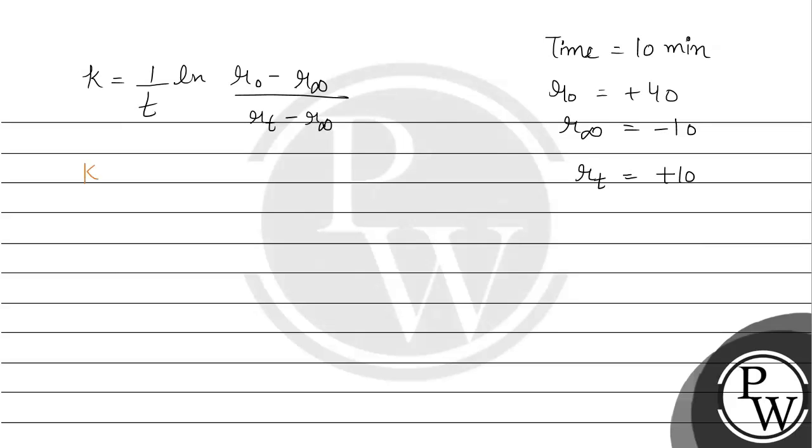And now we can put the values. Rate constant in per second, which means k we have to find. 1 upon 10 ln r0 value is plus 40 minus r infinite is minus 10 divided by rt plus 10 minus r infinite.